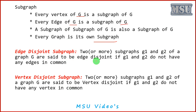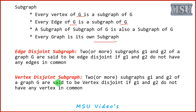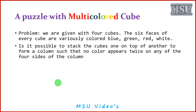Edge disjoint subgraph: two subgraphs g1 and g2 of capital G are defined as edge disjoint if g1 and g2 do not have any edges in common. Vertex disjoint subgraph means the vertices must not be common — then you can say that those two subgraphs are vertex disjoint subgraphs.